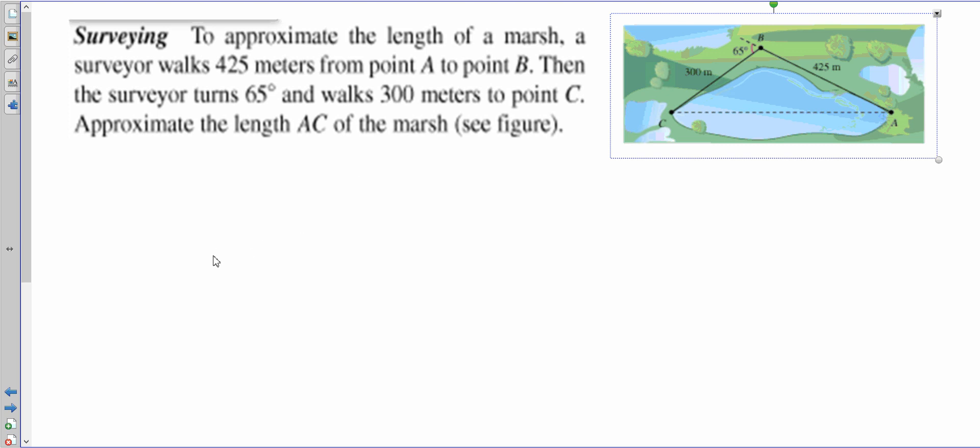See the figure here, but if you didn't have that, how would you write this out? To approximate the length of the marsh, a surveyor walks from point A to point B. You don't know where point B is, so you're just walking.